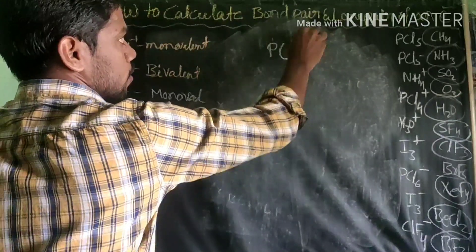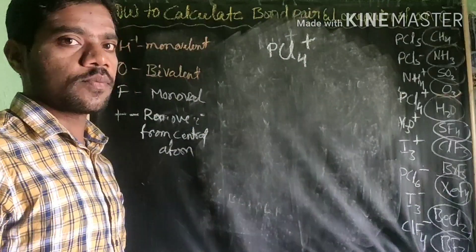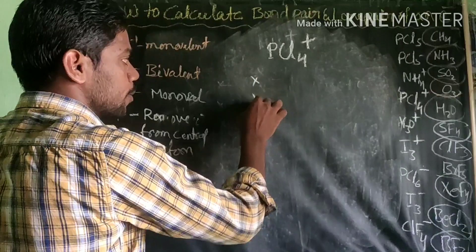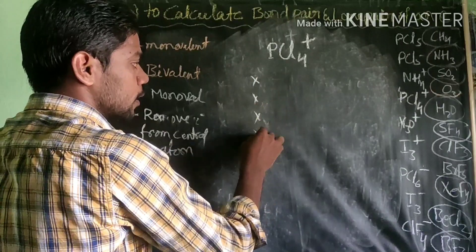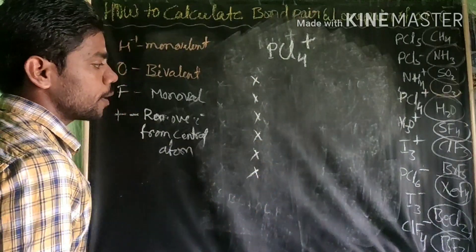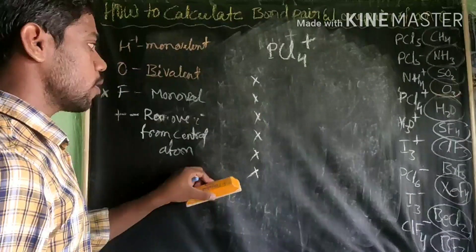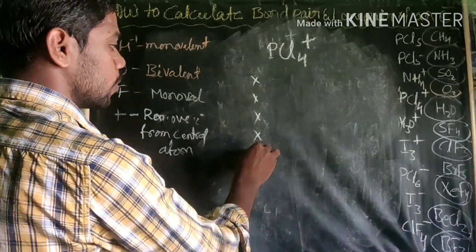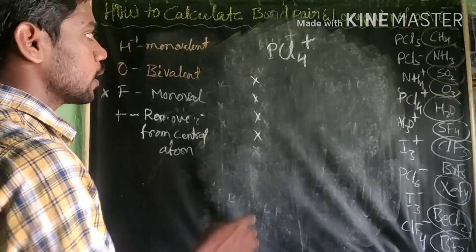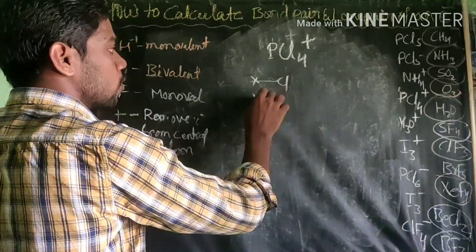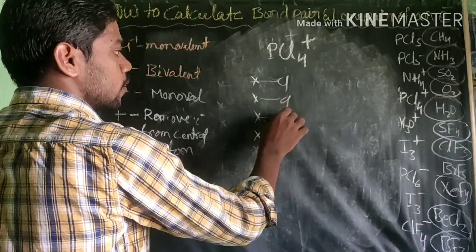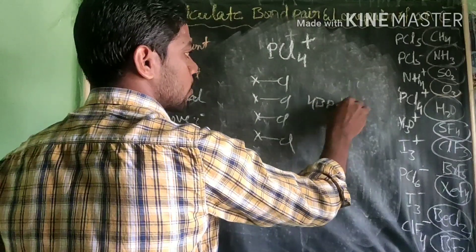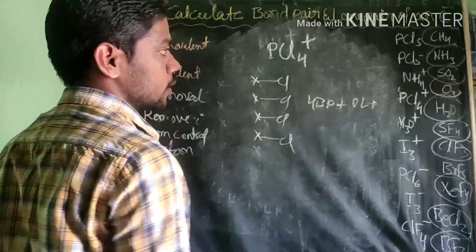Next, PCl4+ — phosphorus is again a 15th group element with 5 valence electrons. One positive charge means we remove 1 electron, leaving 4 electrons. There are 4 chlorine atoms forming 4 bonds. Therefore, PCl4+ has 4 bond pairs and 0 lone pairs.